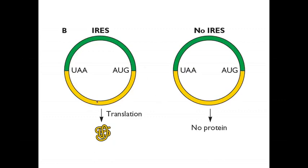If you put the circular RNA with the IRES into the translation extract, you make protein, because again, the ribosomes can bind internally to the IRES. There's no need for a free 5' end.